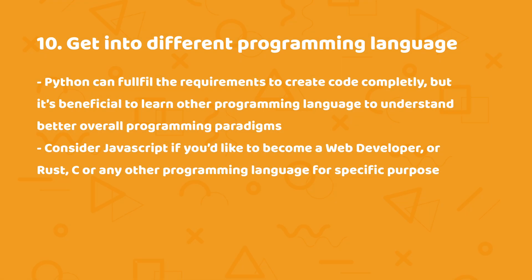The last point: learn a second programming language. Although Python is a general-purpose language that can handle many requirements and different situations, it's always a great idea to learn other programming languages. Thanks to this approach, you deepen your understanding of general programming paradigms, and once you understand one language it's easier to learn another. If you decide to go into web development, JavaScript can be very beneficial. Languages like C, Rust, or newer ones like Go or Julia can also be interesting options.